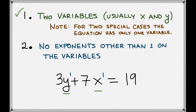Remember, any time we don't see the exponent, we know that it's 1. So it satisfies the second condition. So this is the equation of a line.